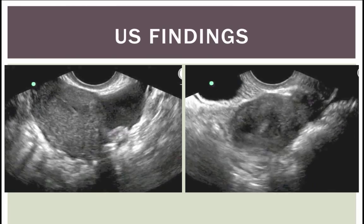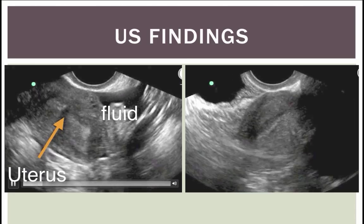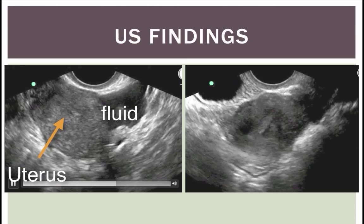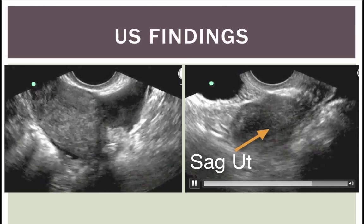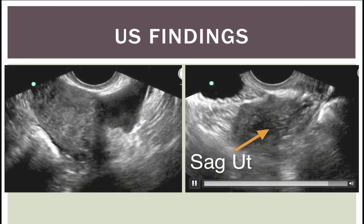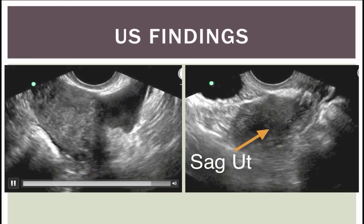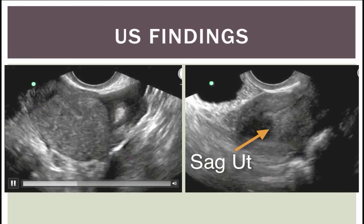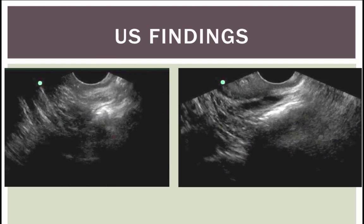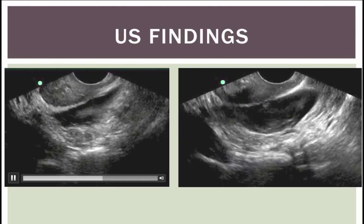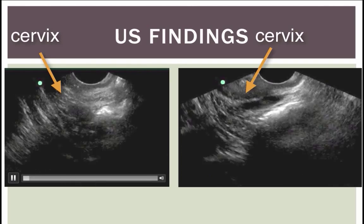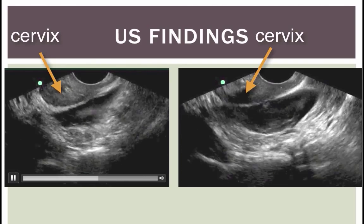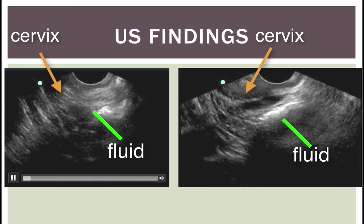Now we're on to transvaginal findings. We see the uterus, we see free fluid here. There's a sagittal view of the uterus - we certainly don't see an intrauterine pregnancy. The endometrial stripe looks thin, there's nothing in there. But we do see some - we're close to the cervix - we see some free fluid here and it has some echoes in it. There's gray stuff floating in there.